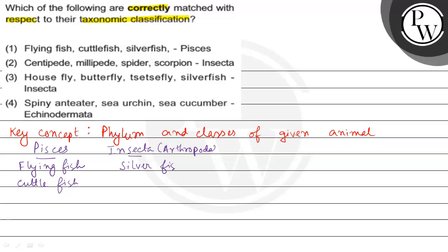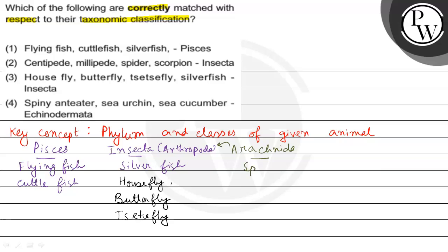Next, agar hum option 3 mein dekhein to hamare paas housefly hai jo again ek insect hai, phir butterfly — butterfly bhi ek insect hai, aur last hai tsetse fly jo bhi ek insect hai. Next, Arthropoda ke andar hi doosra group hai jisko hum class bol sakte hain — wo hai Arachnida, jiske andar aa jaata hai spider aur scorpion.